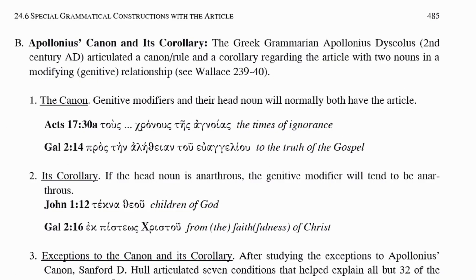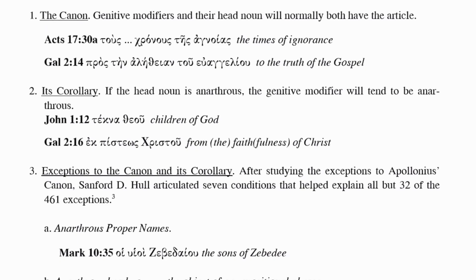The canon — the rule, that's what the word canon means — is that genitive modifiers and their head noun will normally both have the article. So here we're looking at Acts 17:30, from Koine Greek grammar: tus chronus teis agonias, 'the times of ignorance.' Notice that both the genitive noun and its head noun have the article. And so in Galatians 2:14, you have pros ten aleethean tu evangeliu, 'to the truth of the gospel.' So ten aleethean has the article, and so does its genitive modifier. So the canon is: if a genitive word is modifying a head noun and the head noun has the article, typically the genitive modifier has it as well, and vice versa — both will have the article.